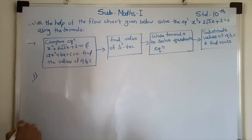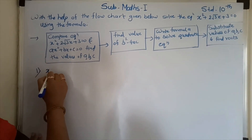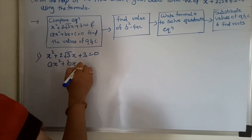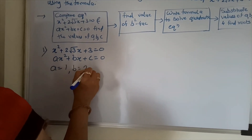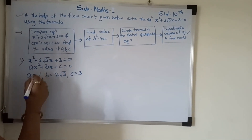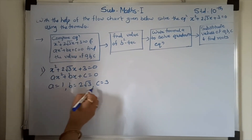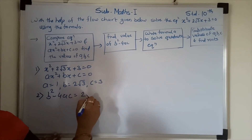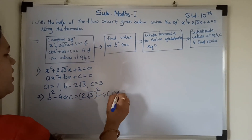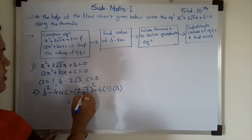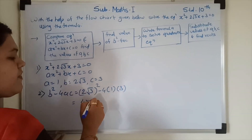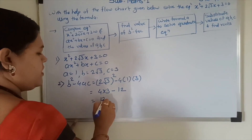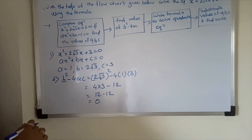Now we solve step by step. Compare equation x square plus 2 under root of 3x plus 3 equal to 0 with ax square plus bx plus c equal to 0. The value of a is 1, b is 2 under root of 3, and c is equal to 3. First step is complete. Then find the value of b square minus 4ac. b square means 2 under root of 3 square is equal to 4 times 3 equals 12. Minus 4 times a times c: 4 times 1 times 3 is 12. 12 minus 12 is equal to 0. The value of b square minus 4ac is equal to 0.